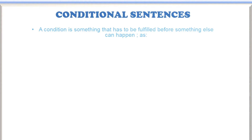As you can see here, if the rain stops, we will play. Here, 'if the rain stops' is a condition. After that, what result can come — we will play. It means it is a conditional sentence, and 'if the rain stops' is a conditional clause.